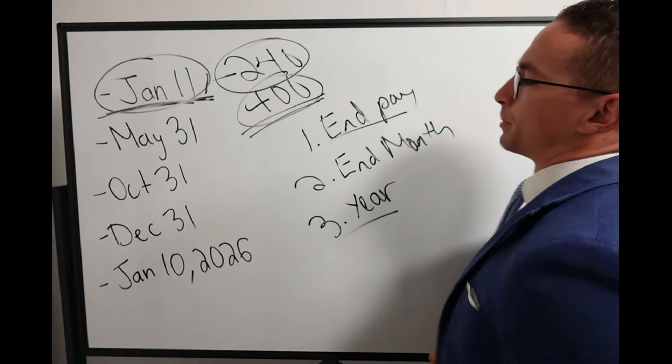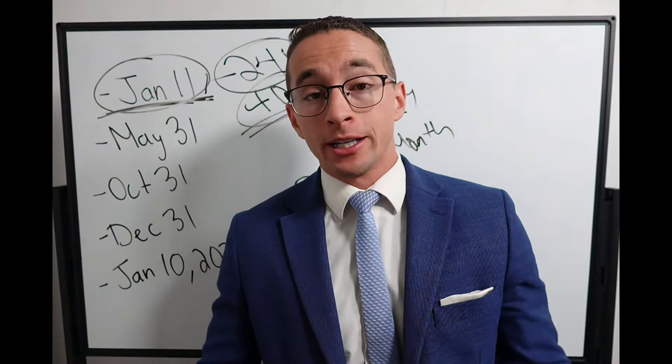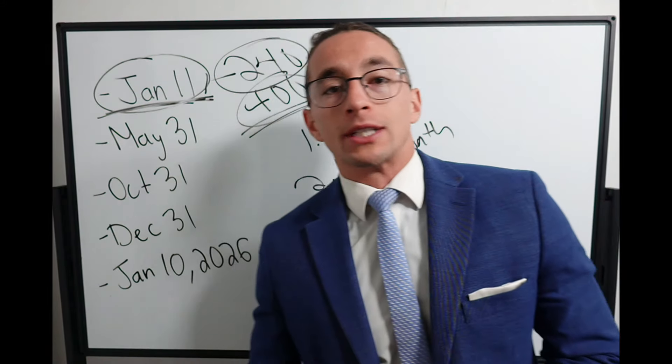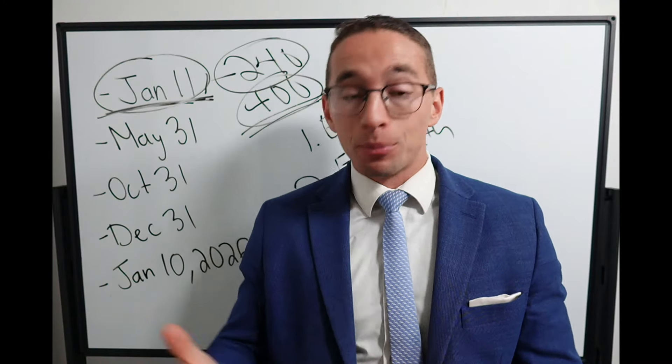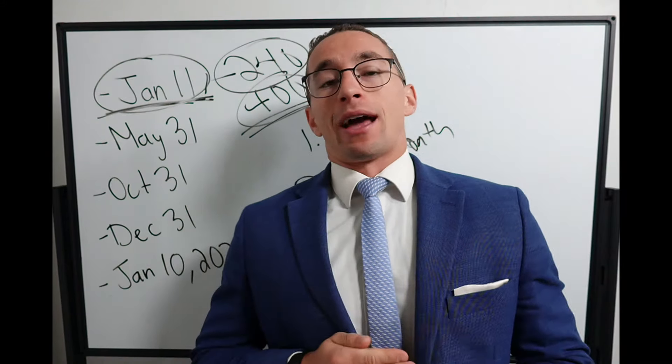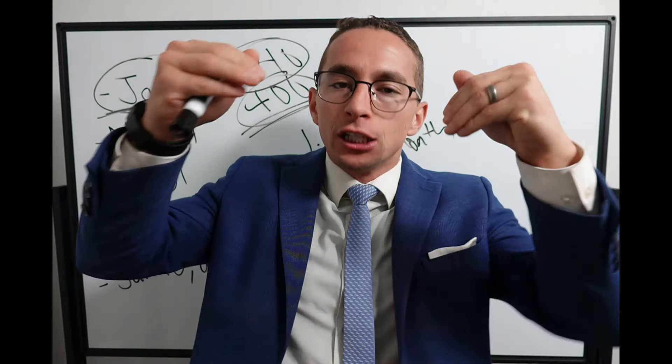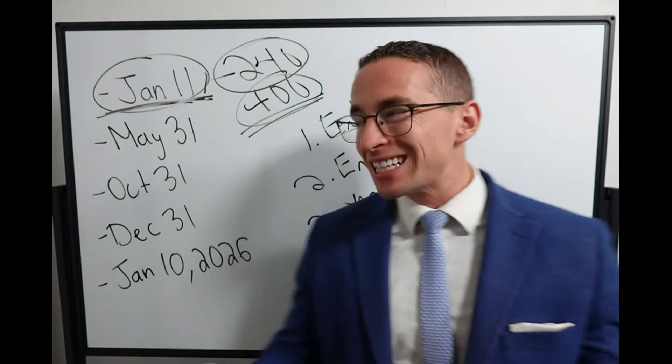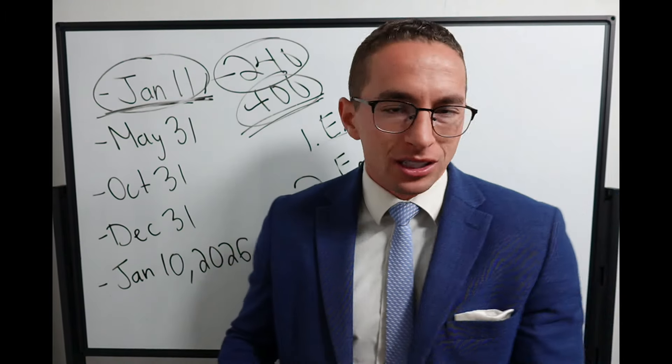First, end of the pay period. If you go the end of a pay period, you accrue the full leave for that pay period. For example, let's say you retired in the middle of a pay period, not at the end, but in the middle of it. You would actually not accrue any leave for that pay period because your leave actually accrues at the end of pay period.